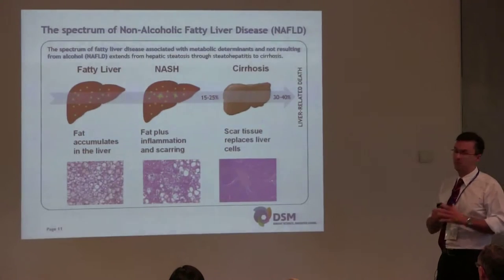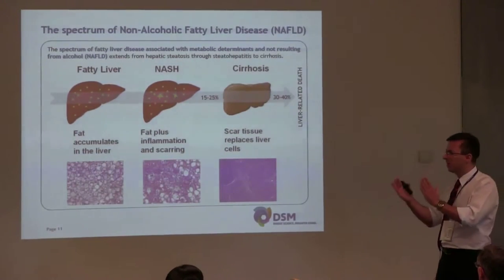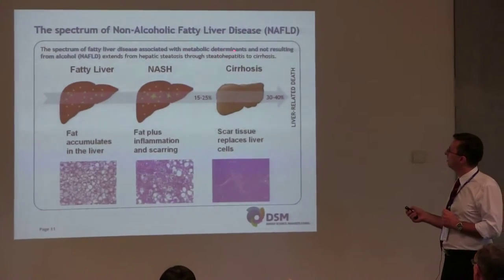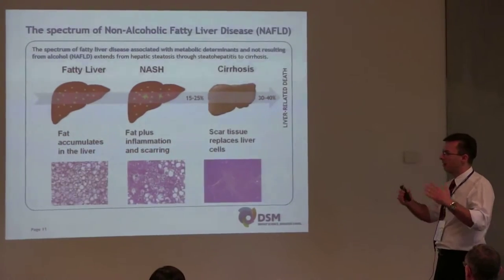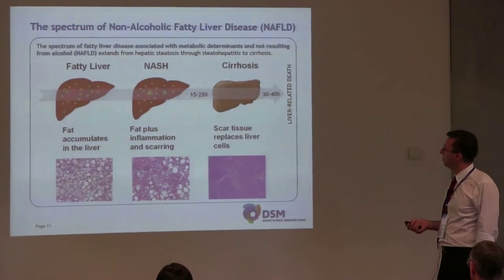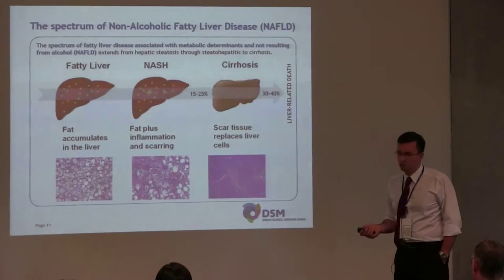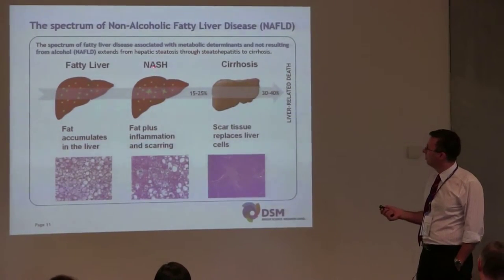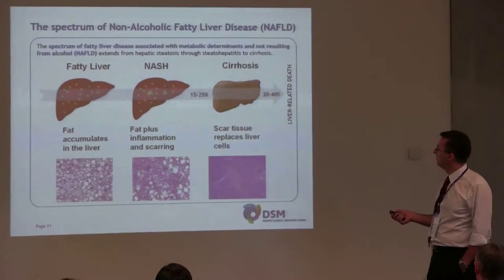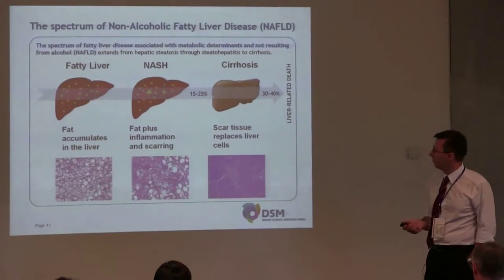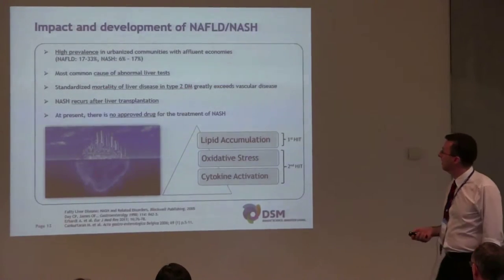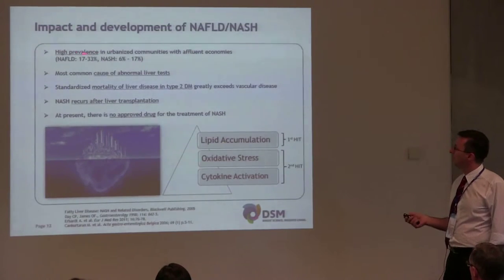Moving to the next disease — which is actually a spectrum disease, not only one condition. It's called non-alcoholic fatty liver disease, a condition associated with certain metabolic determinants. It's not caused by alcohol but is rather linked to diabetes, obesity, and other metabolic conditions. The story starts with fat accumulation in the liver and can develop to so-called non-alcoholic steatohepatitis, which includes inflammation and scarring of liver tissue, and in certain cases can further develop into cirrhosis and even liver-related death.